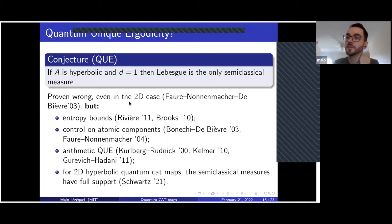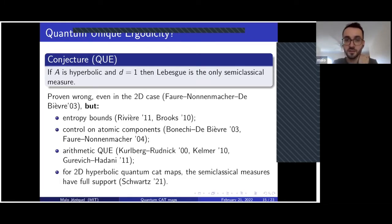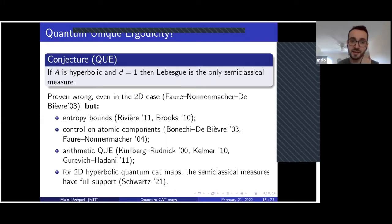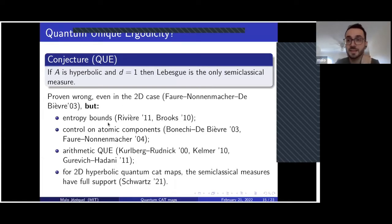The quantum unique ergodicity conjecture — that the set of semi-classical measures is a single point — is wrong, but the set of semi-classical measures is a non-trivial subset of the invariant measures of A and cannot be anything. We have a lot of different results giving restrictions on what semi-classical measures can be.